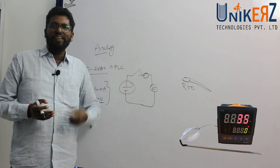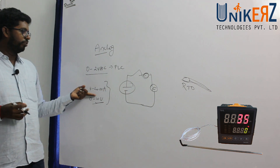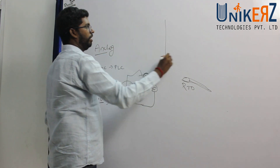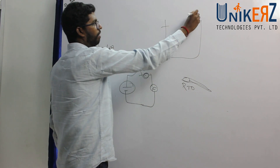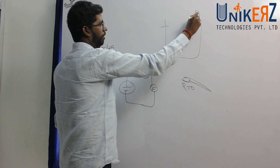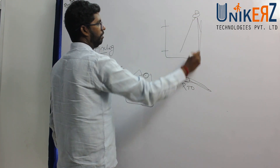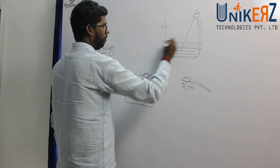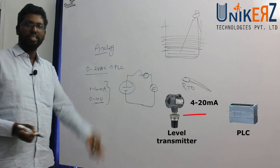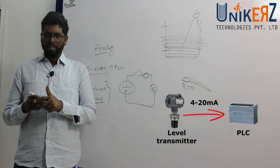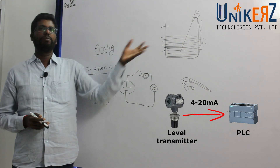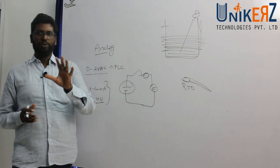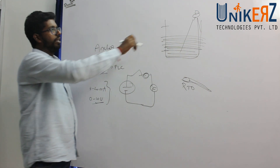This is the instant variation — that is why we use 4 to 20mA or 0 to 10V. If a tank has a low level or high level, using an ultrasonic level transmitter, we get feedback for every millimeter, meter, or foot of the entire level. This allows us to measure level and temperature precisely.